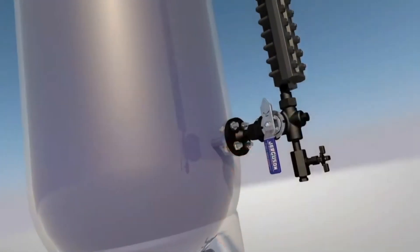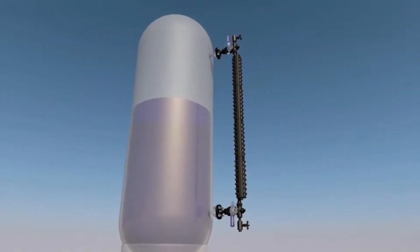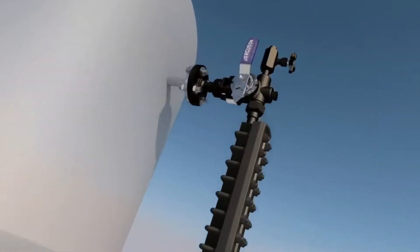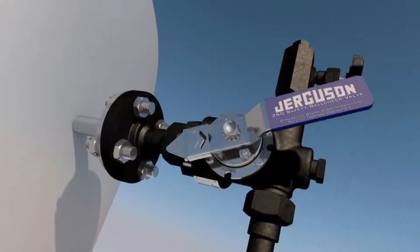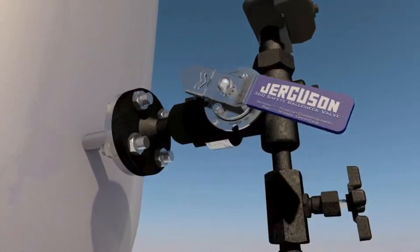The commissioning procedure is quite simple compared to traditional glass gauge ball check valves. When there is already liquid present in the vessel, open the top valve to the bypass position then the bottom valve.